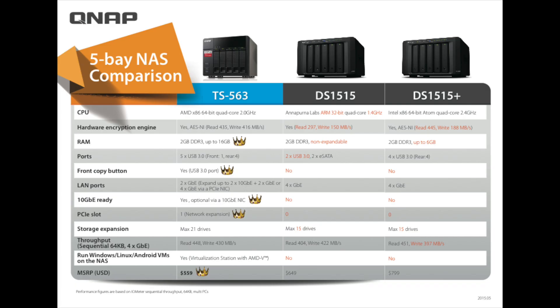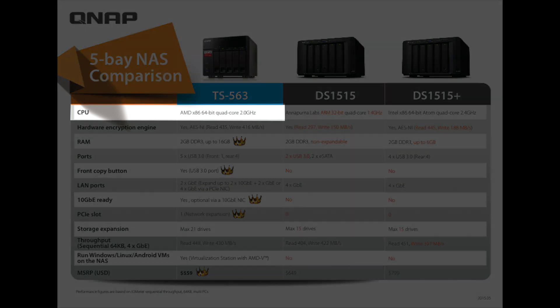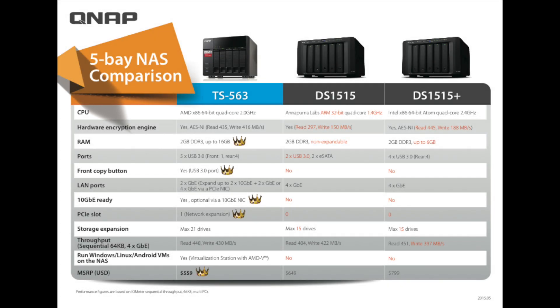Today we're going to start off with the CPU of each of the systems. The TS-563 comes with an AMD 64-bit quad-core 2 GHz processor. The Synology DS-1515 comes with an ARM 32-bit quad-core processor at 1.4 GHz. The DS-1515+ comes with an Intel 64-bit Atom quad-core 2.4 GHz processor. We can see some of the differences and similarities of the CPUs.